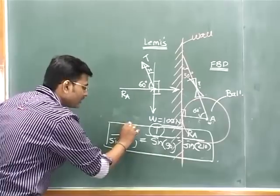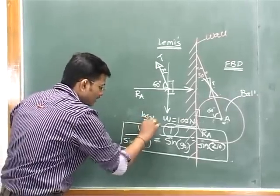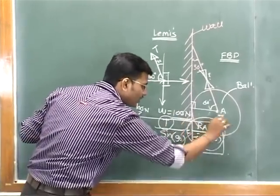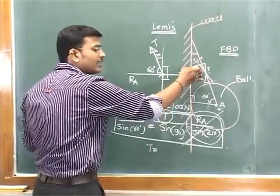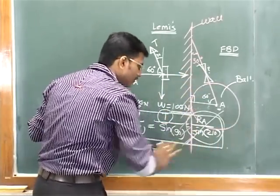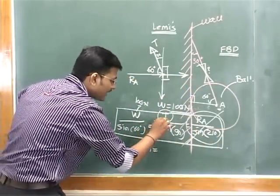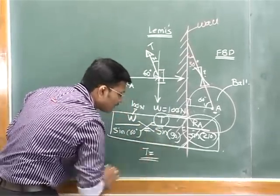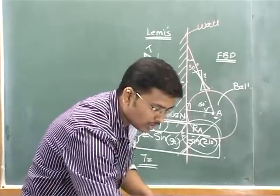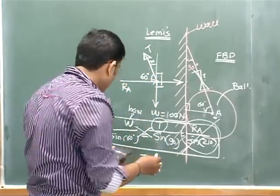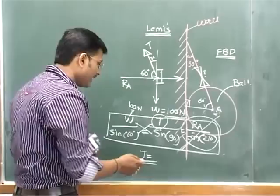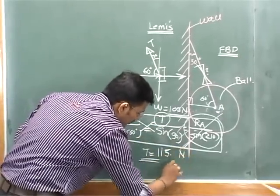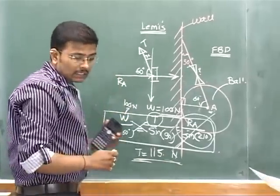W is 100 Newtons and all values are known, so we can calculate T. We don't need to calculate R since only the tension in the string is asked. Using cross multiplication: T = W × sine(90°) / sine(60°) = 100 × 1 / 0.866, which gives approximately 115 Newtons.